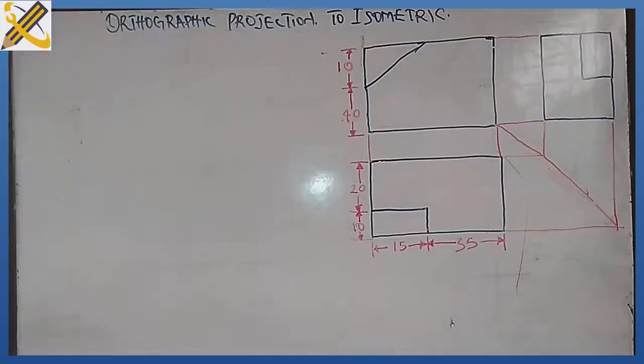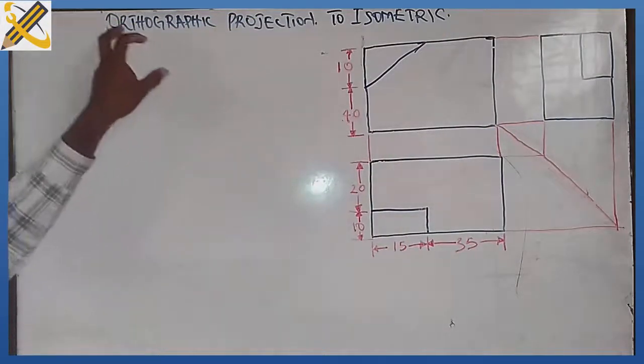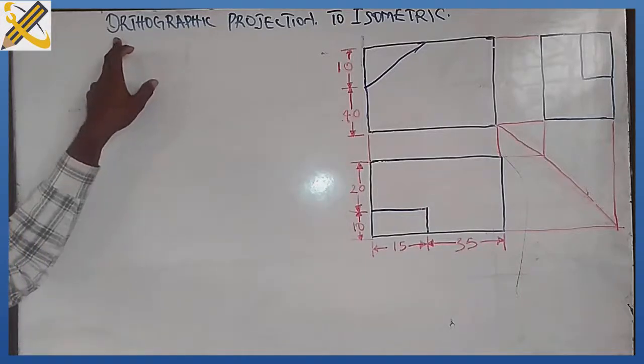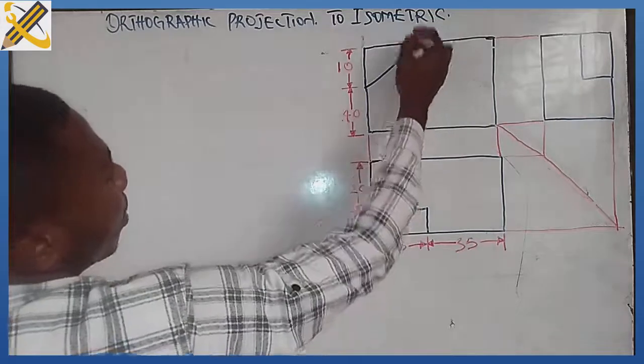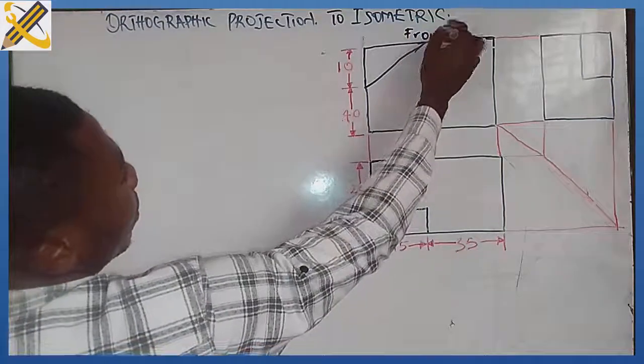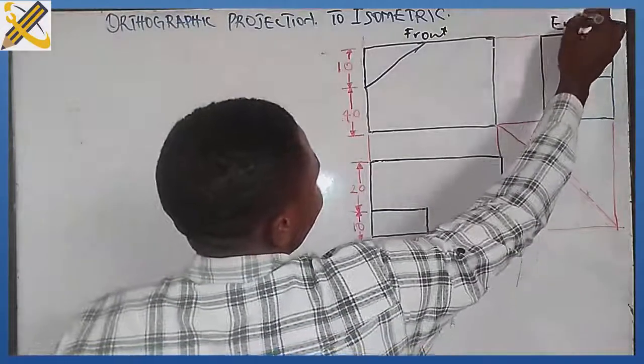Good day, we'll be looking into the conversion of this blocked object from orthographic projection into isometric drawing. This drawing is projected in first angle projection. This area we have our front view, this bottom here is our plan, then this area is our end view.